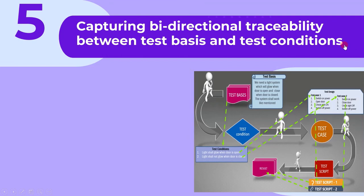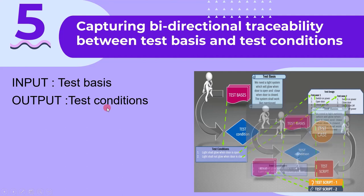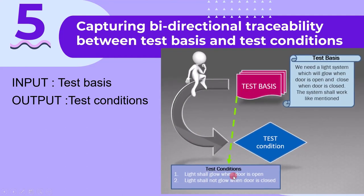The fifth main activity of test analysis is capturing bidirectional traceability between test basis and test conditions. At the test analysis stage, we have the test basis as input and test conditions as output. We should link them so that we know which test condition belongs to which test basis. This process is called traceability.